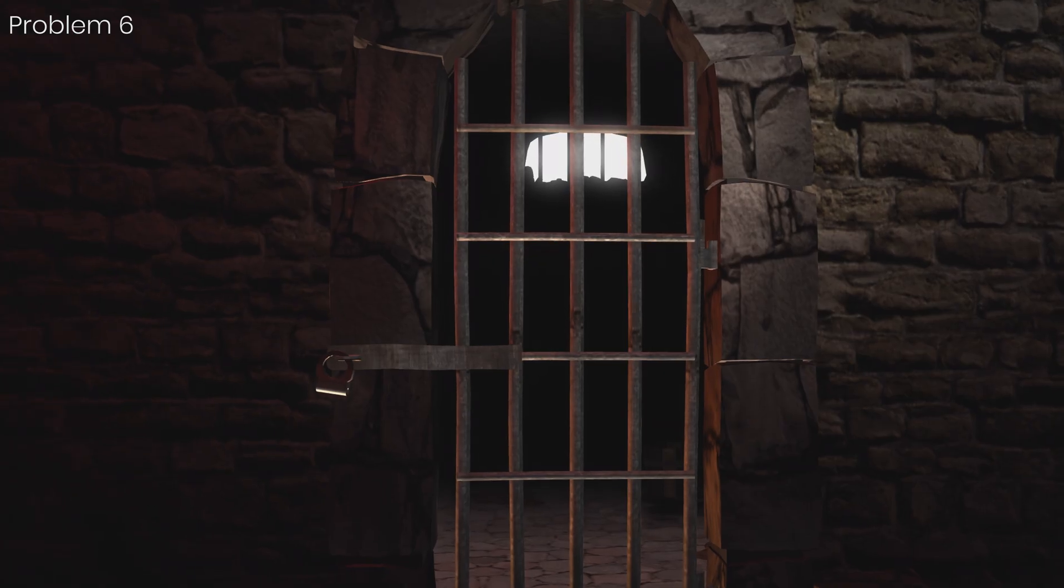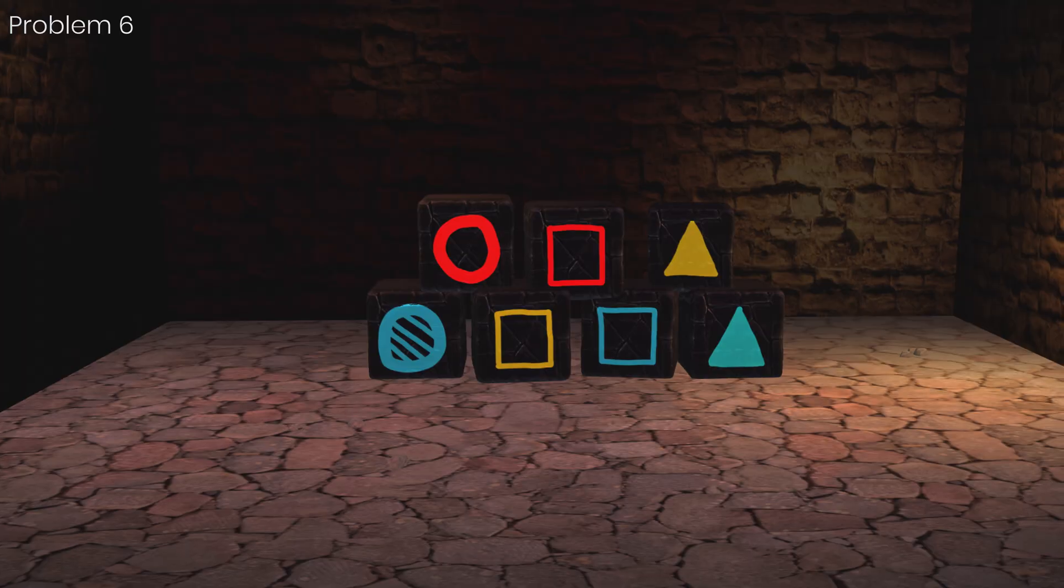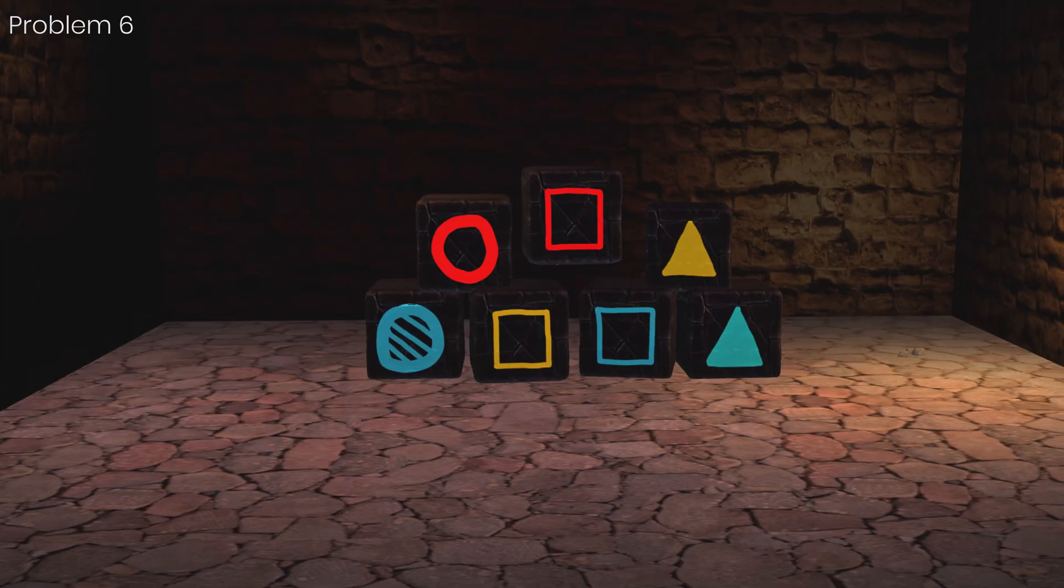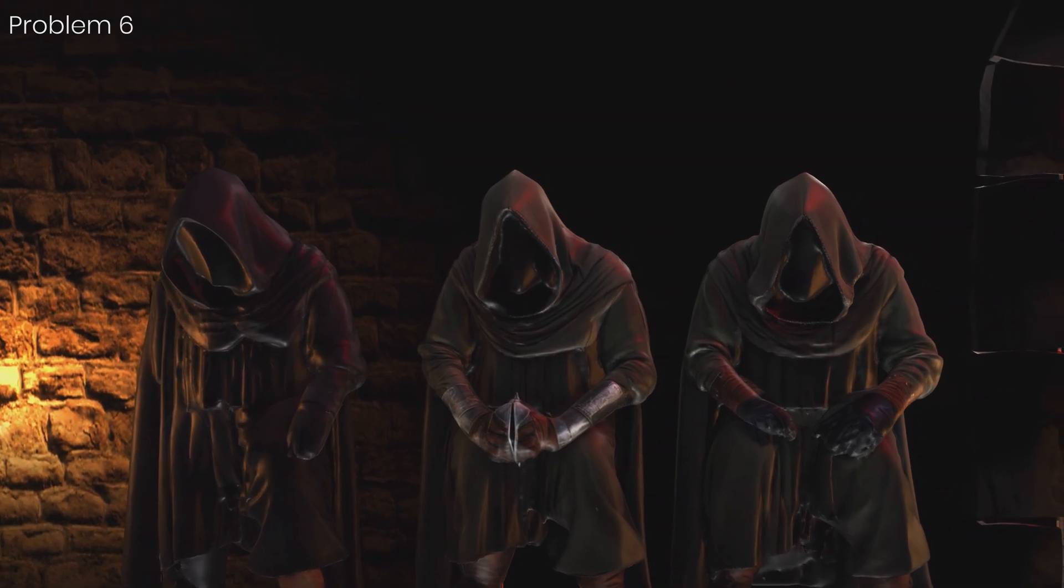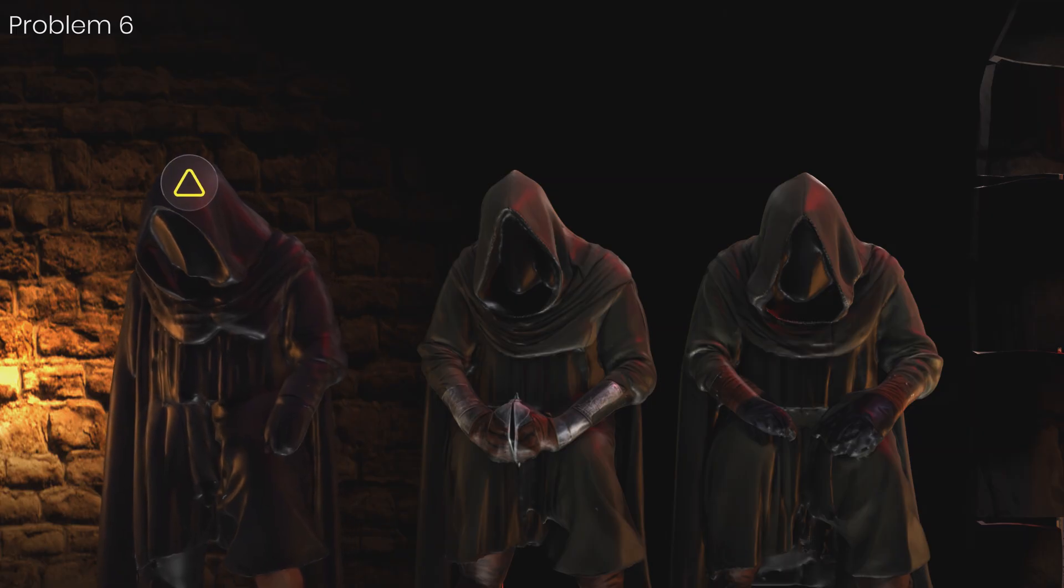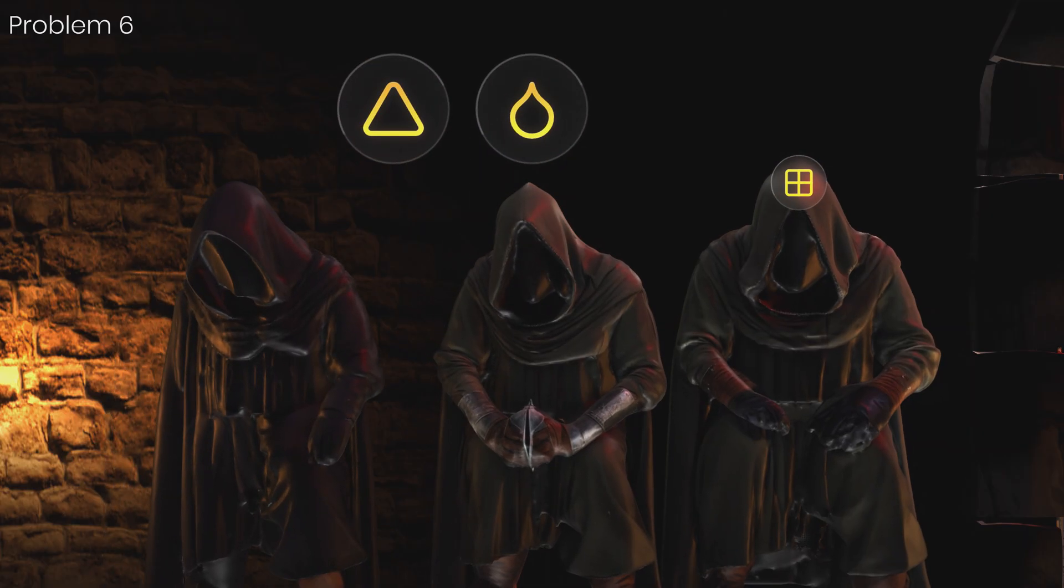You've been captured. There are seven different boxes. One of the boxes contains a key to your cell. The three other prisoners in your cell are expert logicians like you. Each prisoner knows one attribute about the box containing the key. One prisoner knows the shape, another knows the color, while the last prisoner knows the pattern.